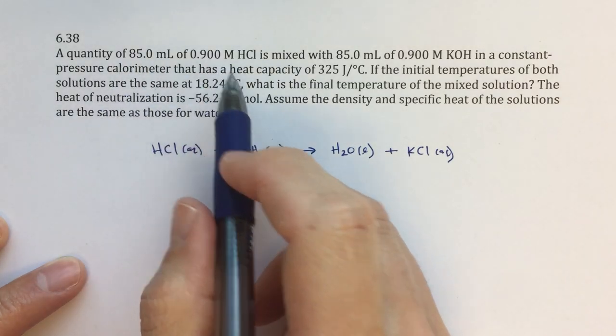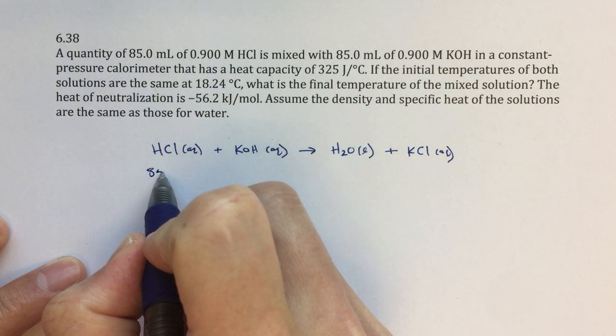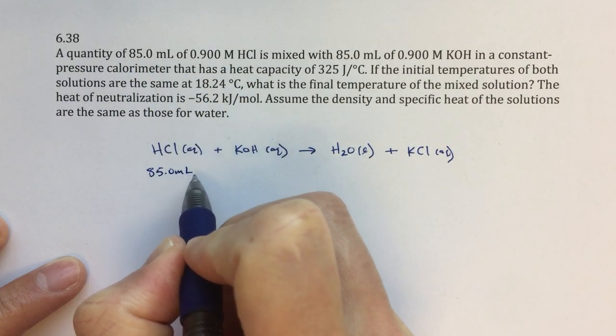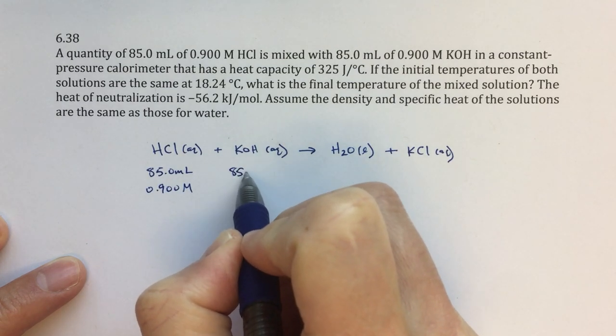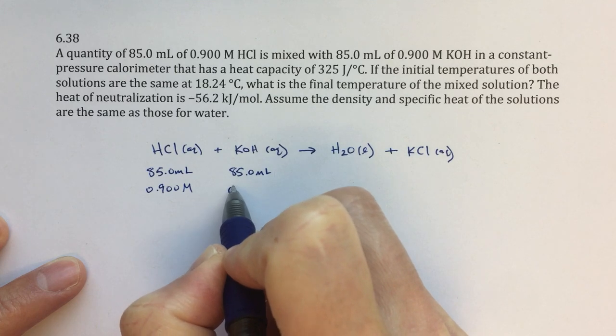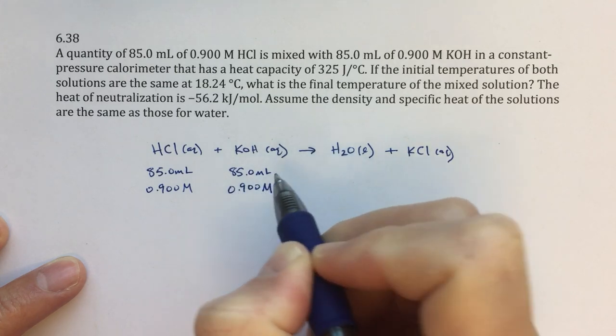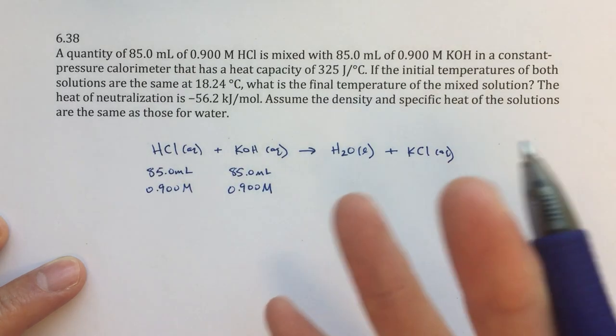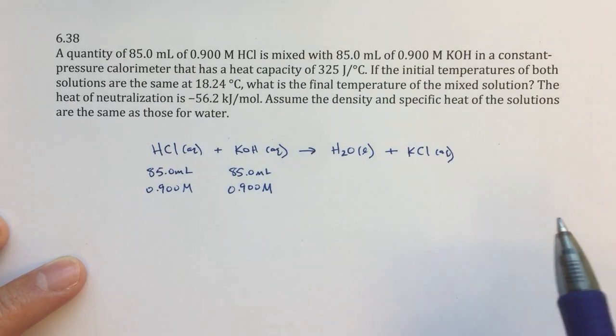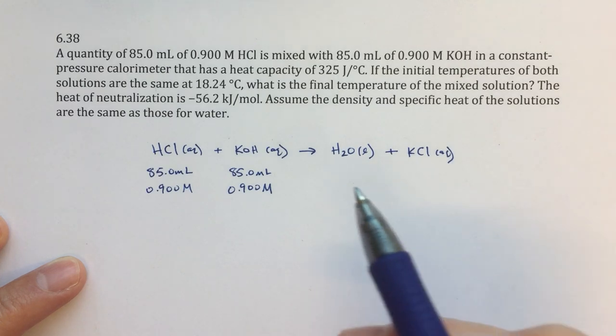We have 85 milliliters of each, so I will just write 85 milliliters, 0.900 molar, 85.0 milliliters, 0.900 molar. And it might seem sort of redundant to be organizing your information like this or writing this out, but it's really, really helpful, I think, as we go through the problem. So I'd really encourage you to do that.